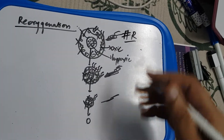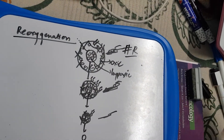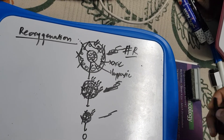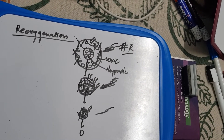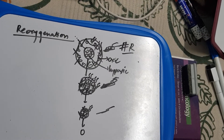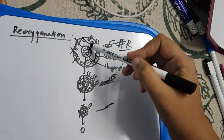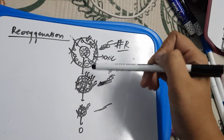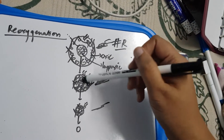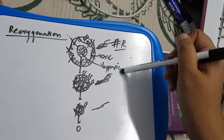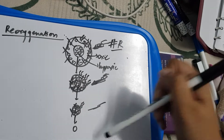So that is the concept of reoxygenation. Hypoxic cells are radio-resistant, and the hypoxic fraction decreases progressively with each fraction of radiation treatment.